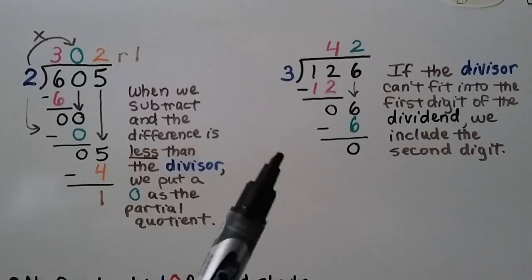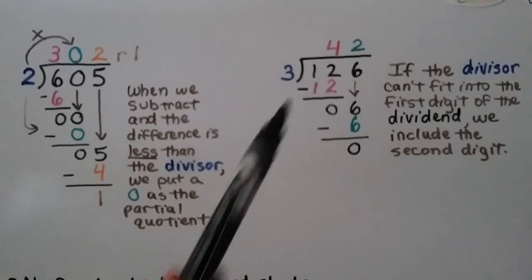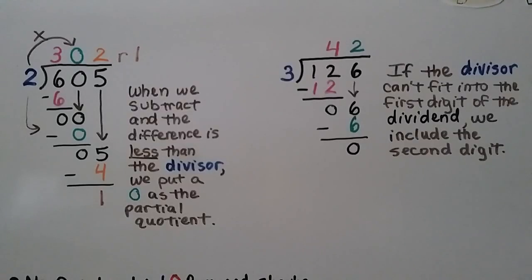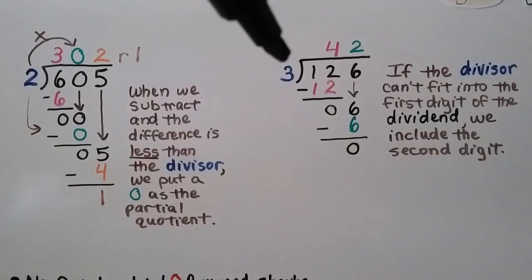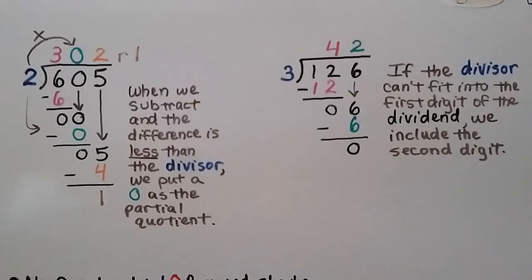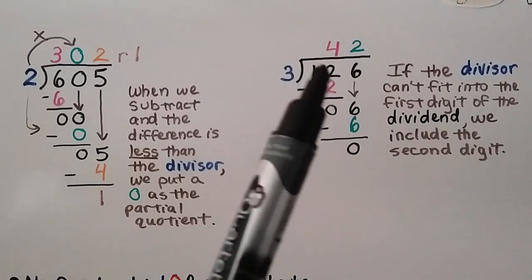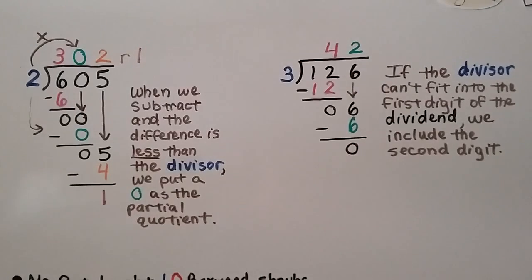Here we have 126 divided by 3. We ask how many times can 3 fit into 1 — it can't. So we include the second digit. How many times can 3 fit into 12 — 4 times. We write the 4 up here; 3 times 4 is 12. We subtract and get a 0, then drop the 6 down. How many times can 3 fit into 6 — 2 times, because 3 times 2 is 6. We subtract and get a 0. No remainder. Because 3 didn't fit into the first digit, we included the second digit of the dividend.